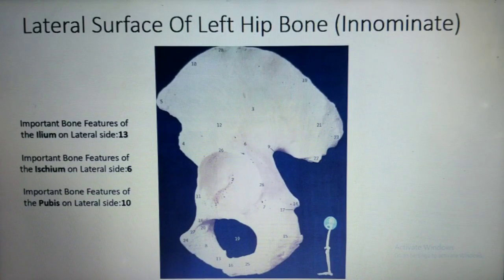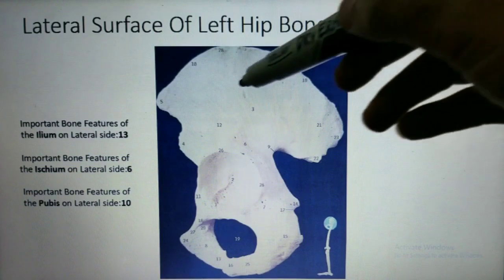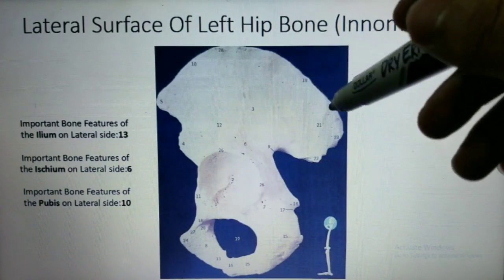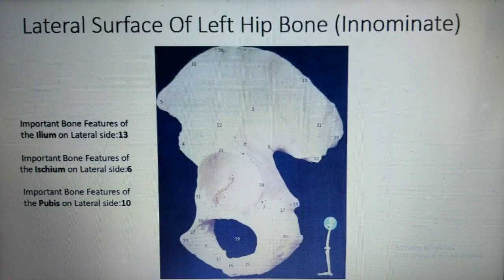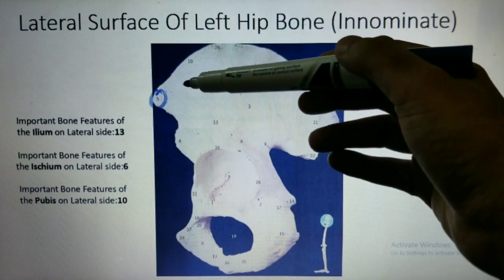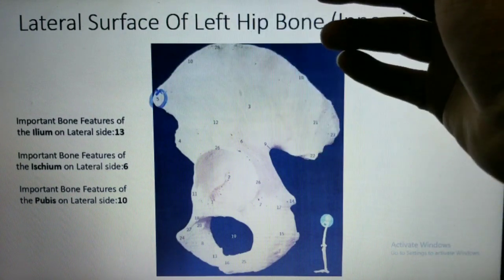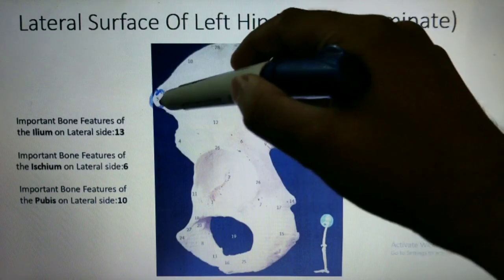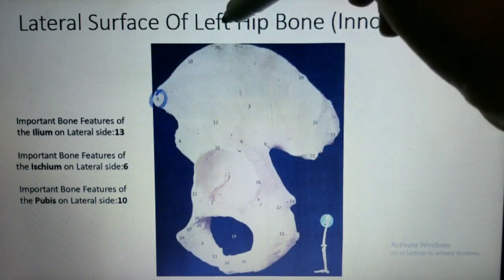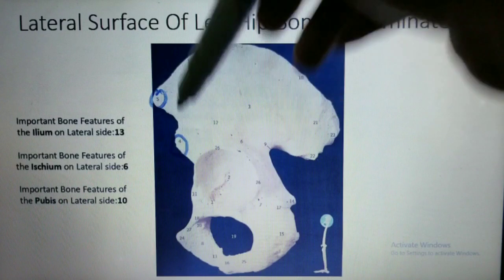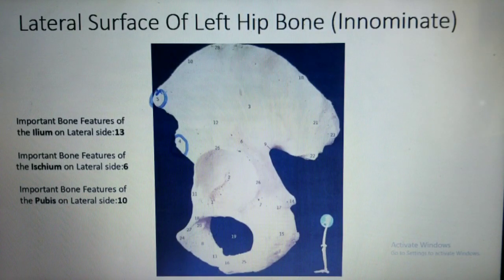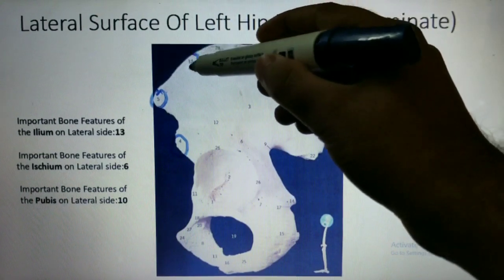This is a picture of the lateral surface of the left hip bone. First of all, we will study the bone features of the ilium — there are 13 basic main bone features to learn. Number 5 is the anterior superior iliac spine, while number 4 is the anterior inferior iliac spine. Number 10 is the iliac crest.